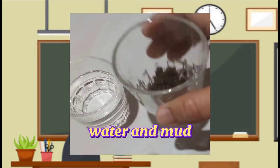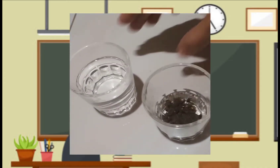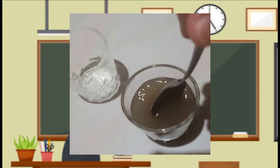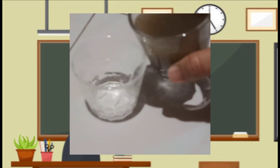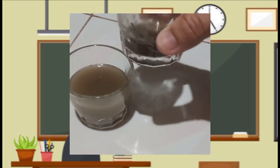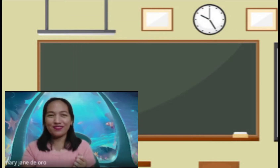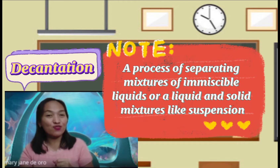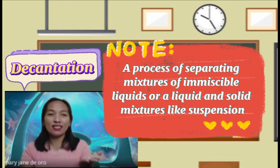Here we have mud and lots of water. I will pour the water, mix it, and then if we are going to separate the mixture — remove the water and leave the mud. That separating method is what we call decantation. It is the process for the separation of mixtures of immiscible liquids or a liquid and a solid mixture, such as a suspension.